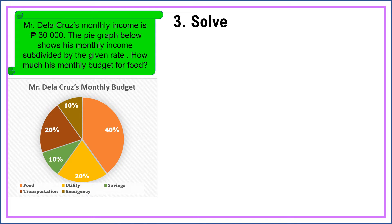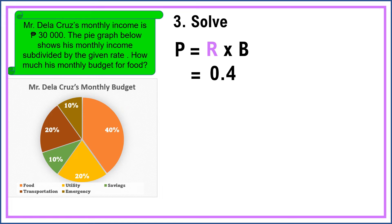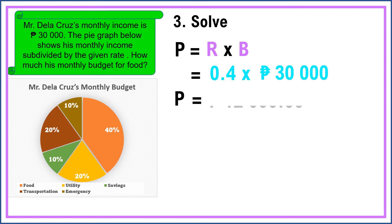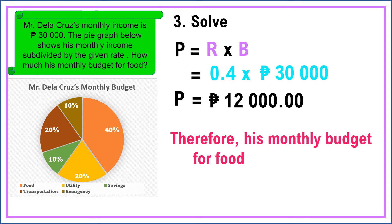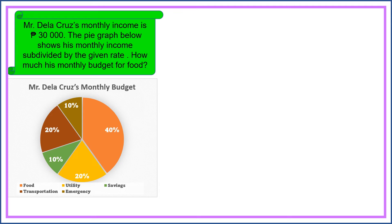The next step is we're going to carry out the plan. We're going to use this formula: P is equal to R times B, where P is the percentage, R is the rate, and B is the base. Substituting the values: R is forty percent or four-tenths, B is thirty thousand pesos. Four-tenths times thirty thousand pesos is equal to twelve thousand pesos. Therefore, his monthly budget for food is twelve thousand pesos.